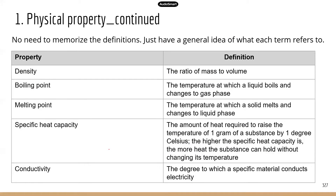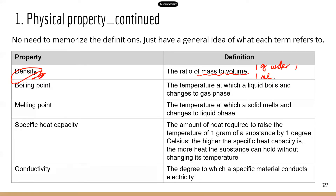I made a table to summarize some of the common physical properties with their definitions, so you have an idea what each property is about, because you may see one question on physical properties of substances. The most important one is density, because it is used a lot in real life. Density is the ratio of mass to volume. For example, if you have one gram of water and you measure the volume, which is one mil, the density is going to be mass — one gram — divided by the volume. So that will be the density: one gram per mil for water.